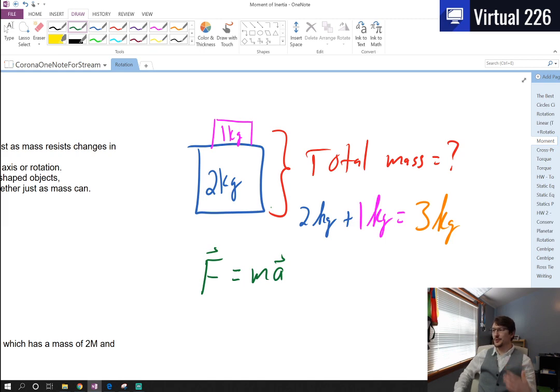Inertia is a property of matter that resists accelerating the speed up or resisting the slowing down of an object, and the more mass you have, the more resistance to change in motion you have.